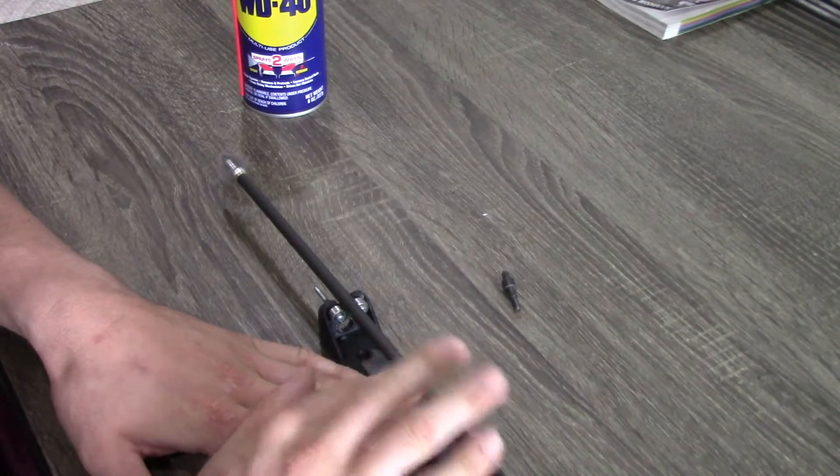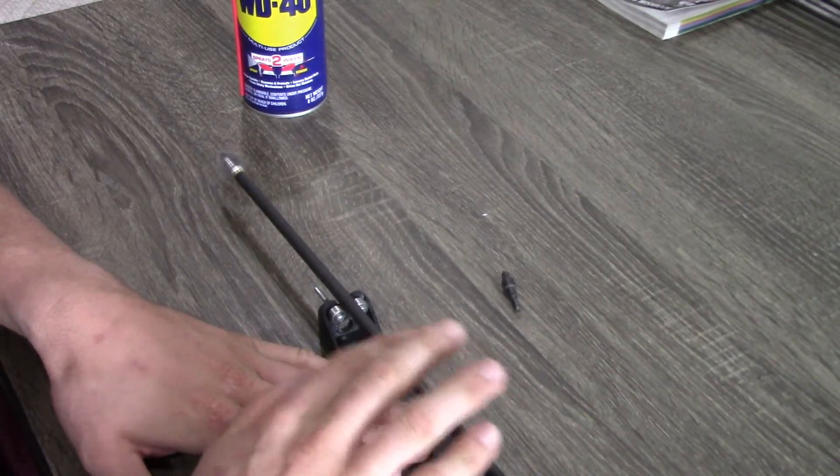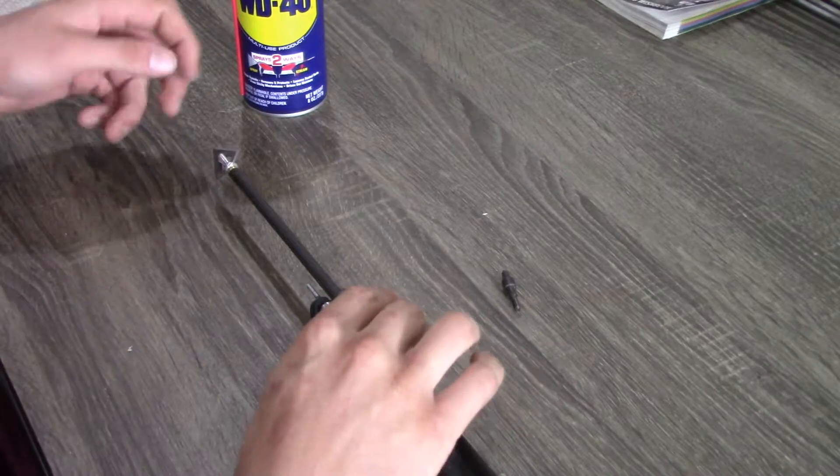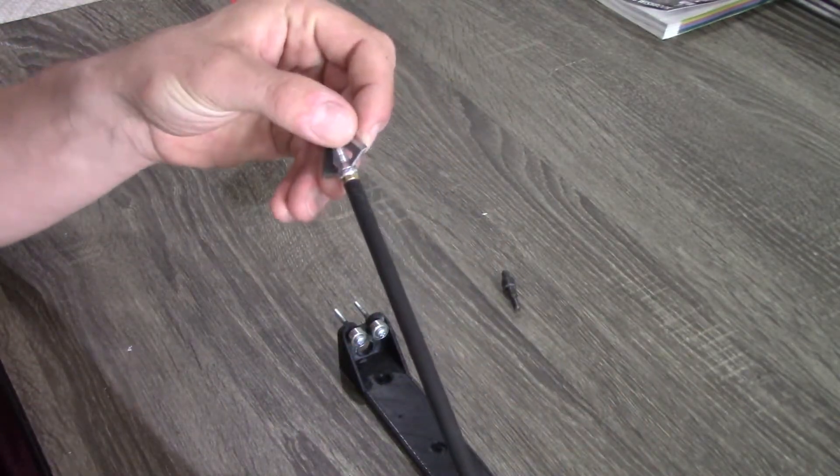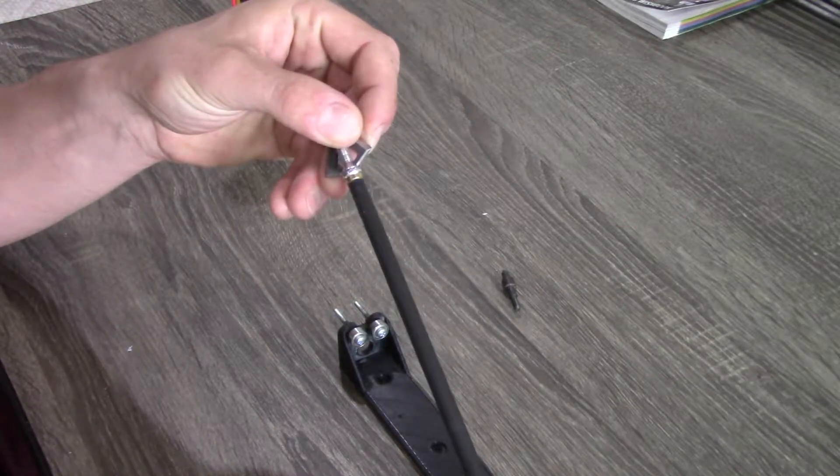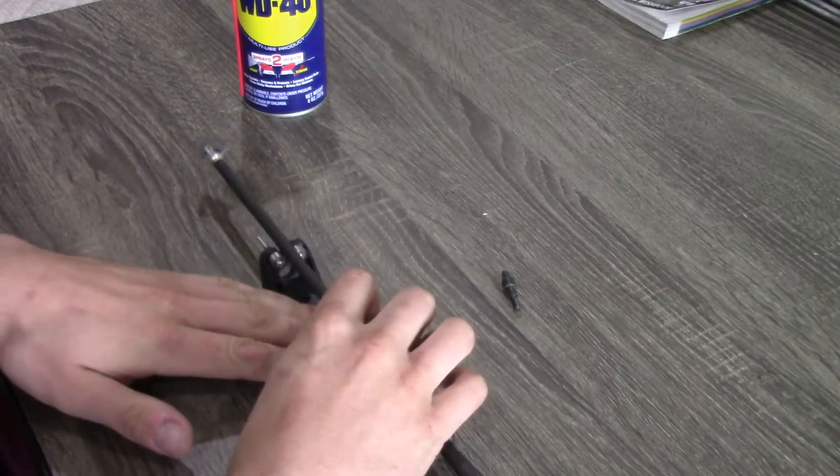Now what I'm looking for is I'm looking for any kind of wobble at the end of the shaft. Now if I detect any kind of wobble, I'm going to rotate the insert about a quarter turn and spin it again to see if that eliminated any wobble.